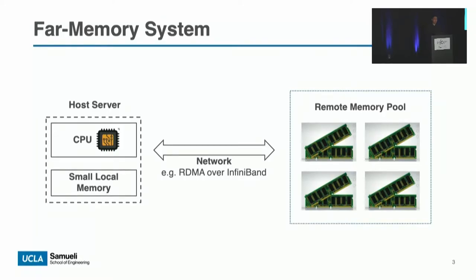Most far memory systems build on a cache and swap mechanism. The host server is usually equipped with very strong cores and some amount of memory. It uses local memory as a data cache and accesses remote memory through special high-speed network stacks such as RDMA over InfiniBand. Once a page that does not reside in local memory is accessed, a page fault is triggered and the page is fetched from remote memory. Since accessing remote memory is slower, good locality and effective pre-fetching are crucial to performance.